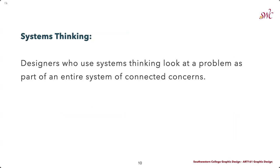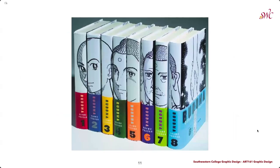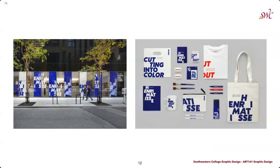Systems thinking is when designers look at a problem as part of an entire system or connected concerns. We can see an example of this where you try to create stronger unity by thinking about the project at both a micro and a macro level. Packaging is a great example — these book covers create a strict system of typefaces, an analogous color palette, titles that use the same baseline, and these are all decisions the designer made to create this system within the larger set. This identity design for Henri Matisse carries over from large print ads into merchandise and even more.